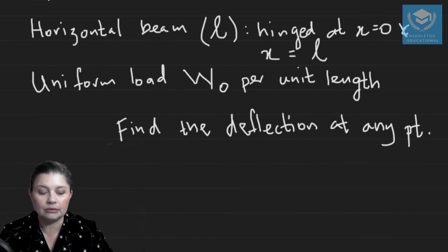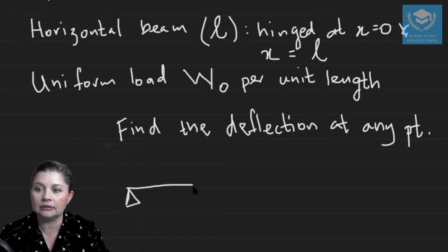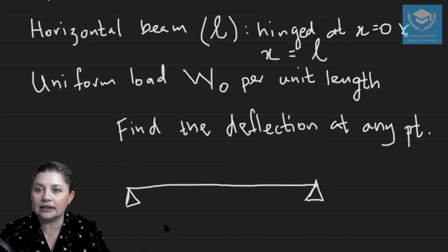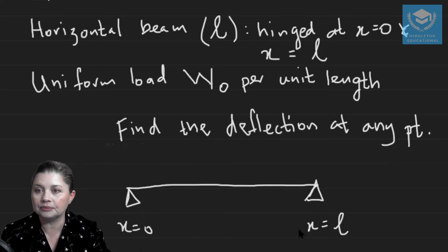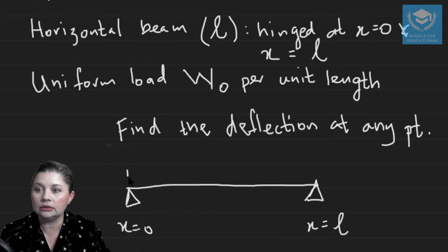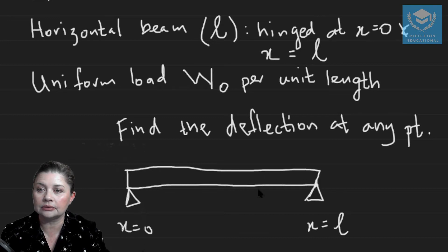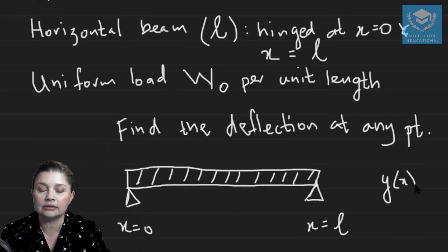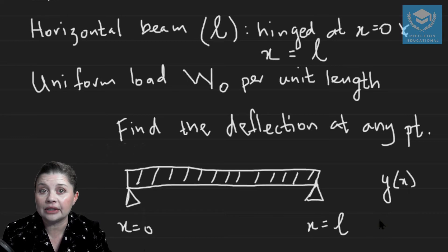We have a horizontal beam which is simply supported — a support on each side. It's supported where x equals 0 and where x equals L. There is a uniform load per unit length across the entire beam. We need to find the deflection at any point, which is Y of x, and we are going to use Laplace transforms to find that.